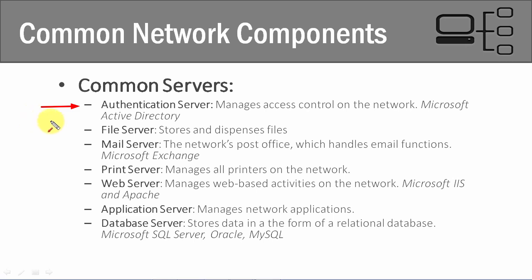A file server, as its name implies, manages and stores the files on the server. It stores files, gives them to users when needed, and stores them again when they're done. The mail server is like a digital post office — it handles the emailing functionality of your network. So if you have Outlook set up and need to send emails to others on your network, that's what the mail server does.